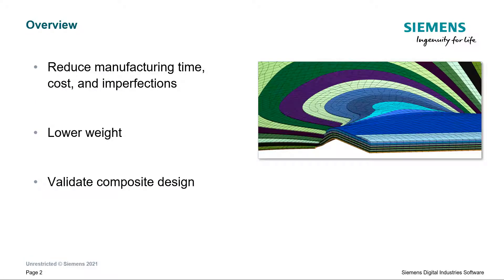To give a quick overview, Siemens can help teams reduce the time spent on manufacturing composites, the trial and error cost normally associated with it, and the quality of the composites, which includes imperfections and weight reduction.